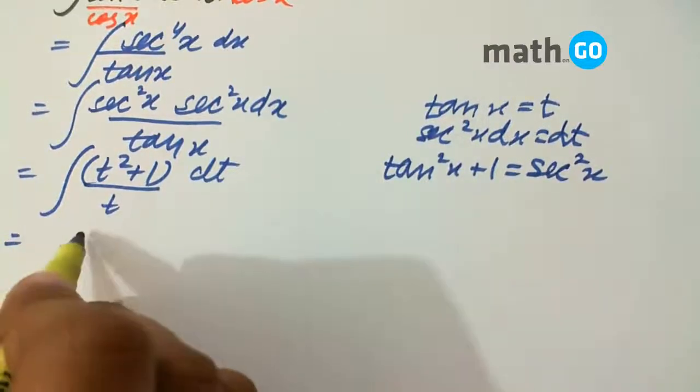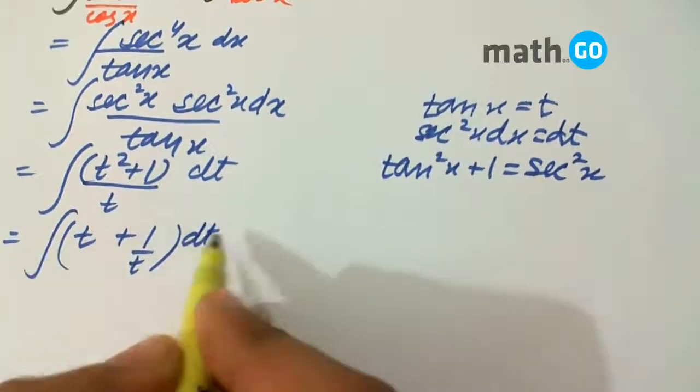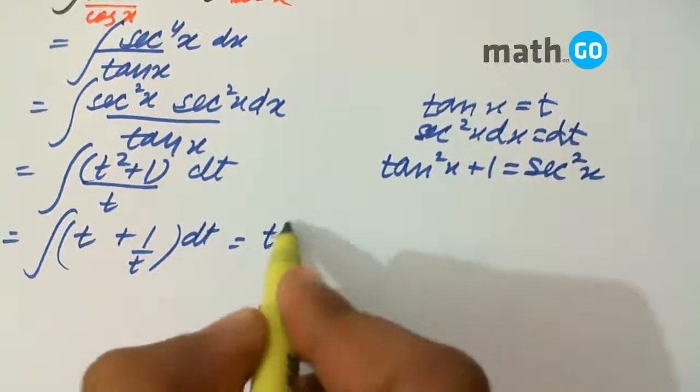So what do we get? We get t plus 1 by t integral. That is nothing but t square by 2.